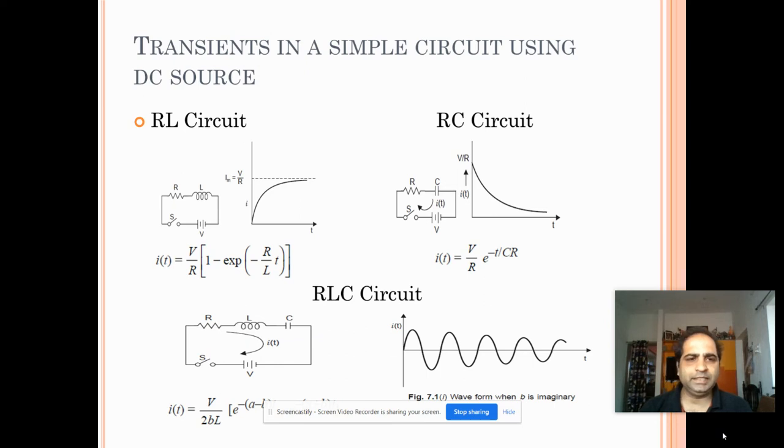Transients in a simple circuit using DC source. For example for RL circuit whenever there is a resistance and inductive circuit, the transient is occurring and at that point of time the current I of T is given by the equation as shown. For an RC circuit the curve is as shown here which is an inverse parabola curve and also the current I of T is given by the formula which is as shown in the slide.